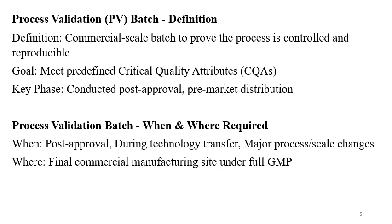Process validation batches, also called PV batches, are commercial scale batches to prove the process is controlled and reproducible. It is important to note that PV batches are also called exhibit batches for some products when the commercial batch size and the PV batch size are the same. For example, if you are manufacturing a batch size of 150,000 tablets and the same will be your commercial scale batch, then you can call it a PV batch as well. This depends on regulatory requirements, country-specific requirements, and the product on a case-by-case basis. One should note whether to call it a PV batch, registration batch, pilot batch, pivotal batch, or exhibit batch. All these batches are to be loaded on stability.